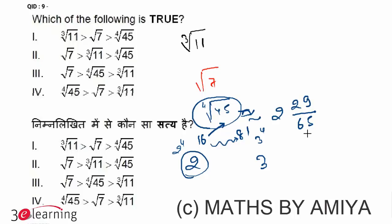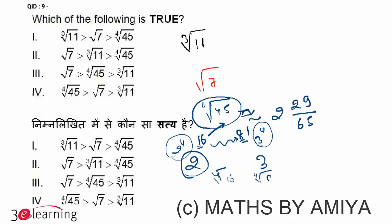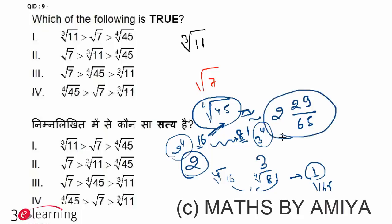We can say the fourth root of 45 is approximately 2 and 29 upon 65. The concept is: we are looking for the fourth root of 45, which should come between 2 and 3. The fourth power gap is 65, and the gap from 16 to 45 is 29, so the approximate fractional part is 29 upon 65.